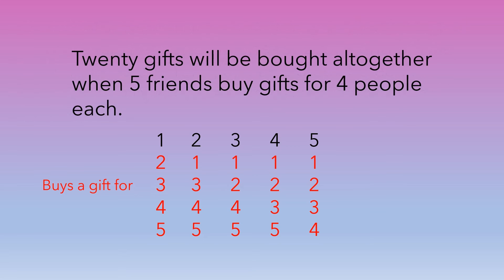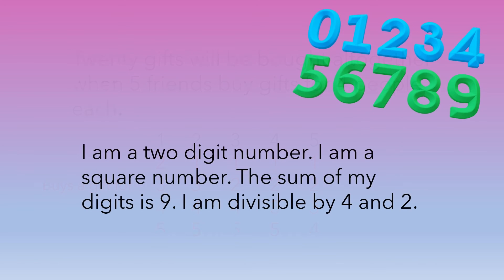20 gifts will be bought all together when five friends buy gifts for four people each. Next puzzle: I'm a two-digit number. I am a square number. The sum of my digits is nine. I am divisible by four and two.